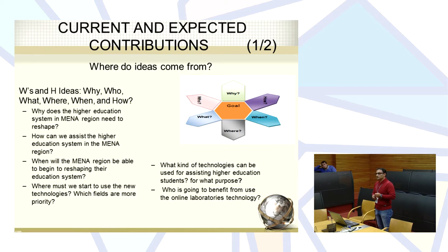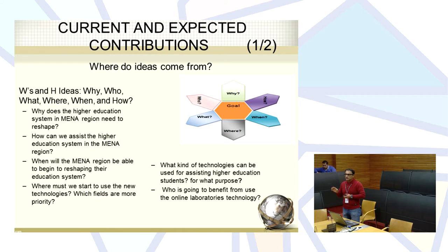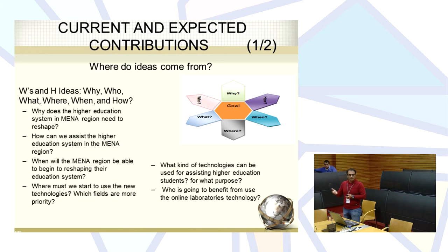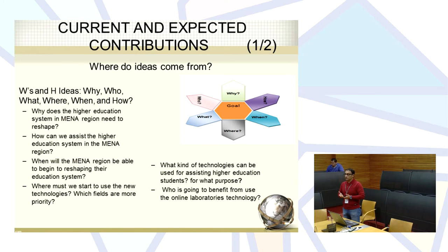For current and expected contributions, we are addressing key questions: Why does the higher education system in the MENA region need improvement? Because it is not equal and needs more support. How can it improve? By sharing experiments. When should regions start sharing to advance their education? Now is a good time, especially with new free tools available. What kind of technology? Online laboratory technology.